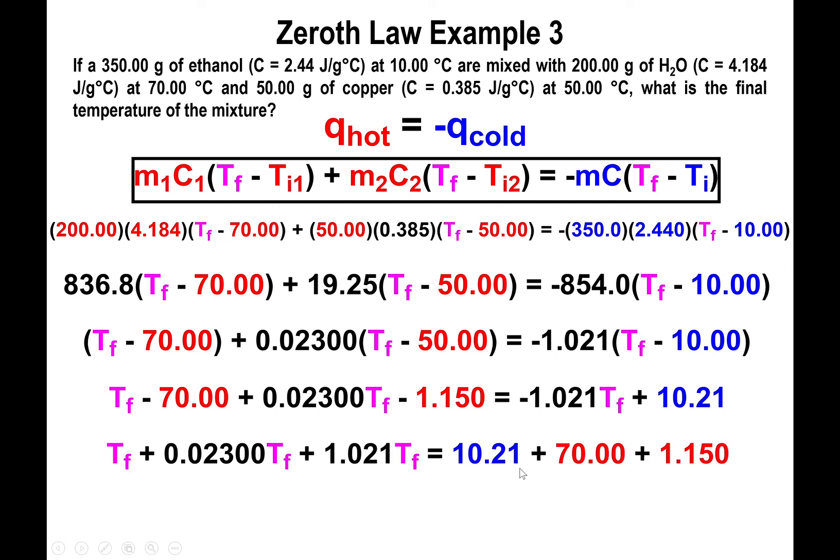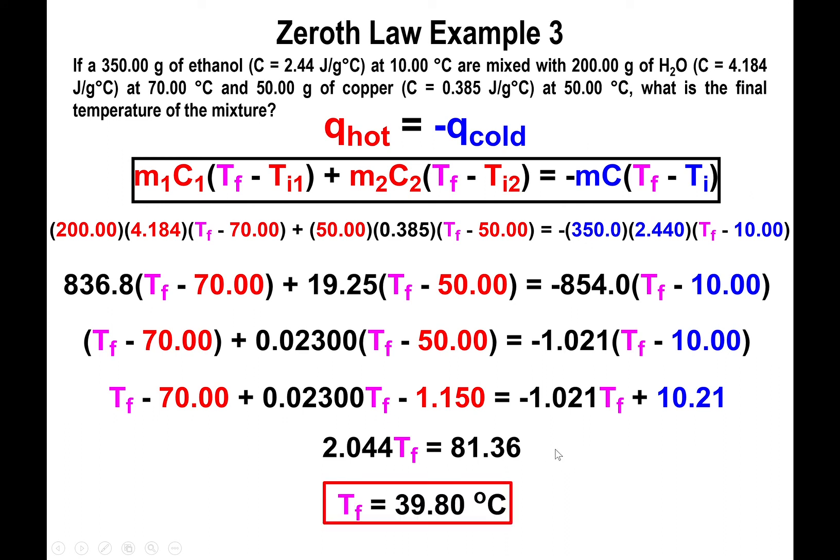This will give you the following setup: T_f plus 0.023 T_f plus 1.021 T_f equals 10.21 plus 70 plus 1.150. When you carry the actual summations, you'll find out that those summations end up being 2.044 T_f equaling 81.36. And if you divide both numbers by 2.044 to isolate for the final temperature, you'll find out the temperature is 39.8 degrees Celsius.